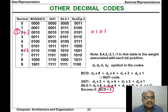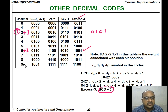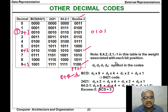That is why it is called XS3. For example, if you want to represent 6, we represent it as 6 plus 3 equals 9. If you want to represent 9, we use 9 plus 3 equals 12, which in binary is 1100. Like this, we represent using the XS3 code. That is why XS3 code is generally called the BCD plus 3 code.